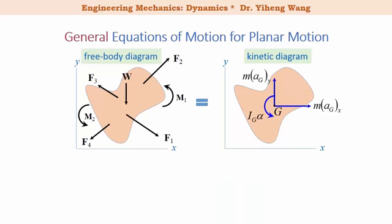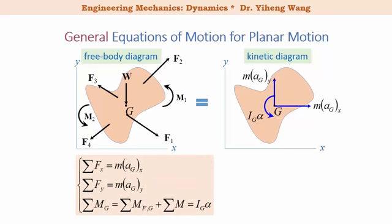Since we can summarize the resultant moment about any arbitrary point P, for convenience we can summarize it about the gravitational center G. The third equation then becomes: the resultant moment about point G simply equals I_G * alpha, where I_G is the mass moment of inertia of this object with respect to an axis that passes through its gravitational center G and is perpendicular to the x-y plane.